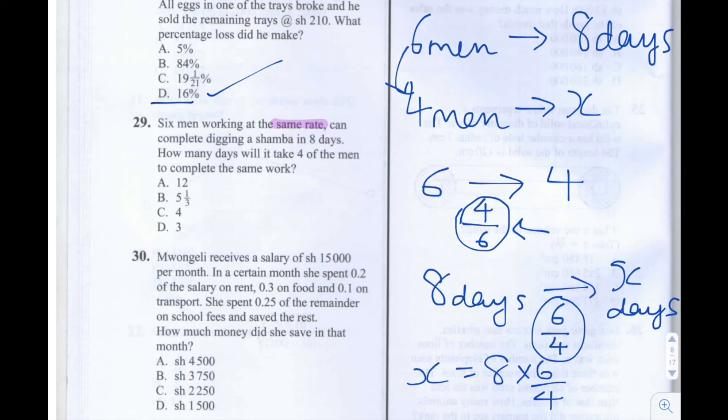So eight divided by four is two. Two times by six is 12. So the answer is 12 days. It will take 12 days for the four men to complete the same work. So the answer is A, 12.